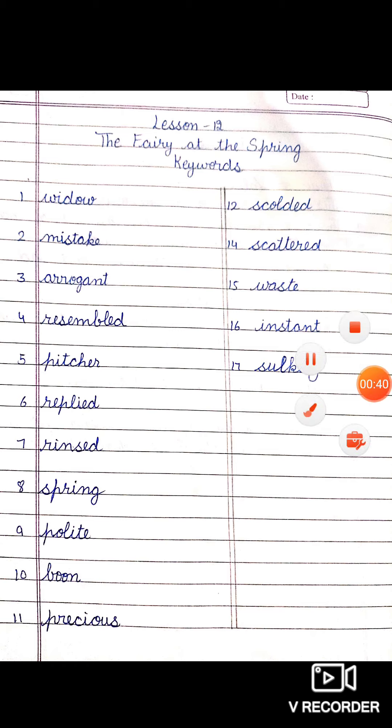The first keyword is widow — a lady whose husband has died. Next is mistake. You will repeat with me: mistake, M-I-S-T-A-K-E. People often used to mistake the elder girls for her mother. Next is arrogant. Arrogant means proud. The mother and the elder daughter were so arrogant.